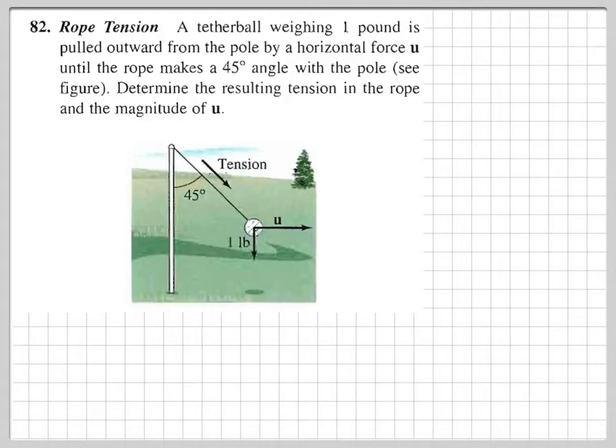Rope tension. A tetherball weighing one pound is pulled outward from a pole by a horizontal force U until the rope makes a 45 degree angle with the pole. See the figure. Determine the resulting tension in the rope and the magnitude of U. This problem is really confusing, so I'm going to try to make this a lot easier.